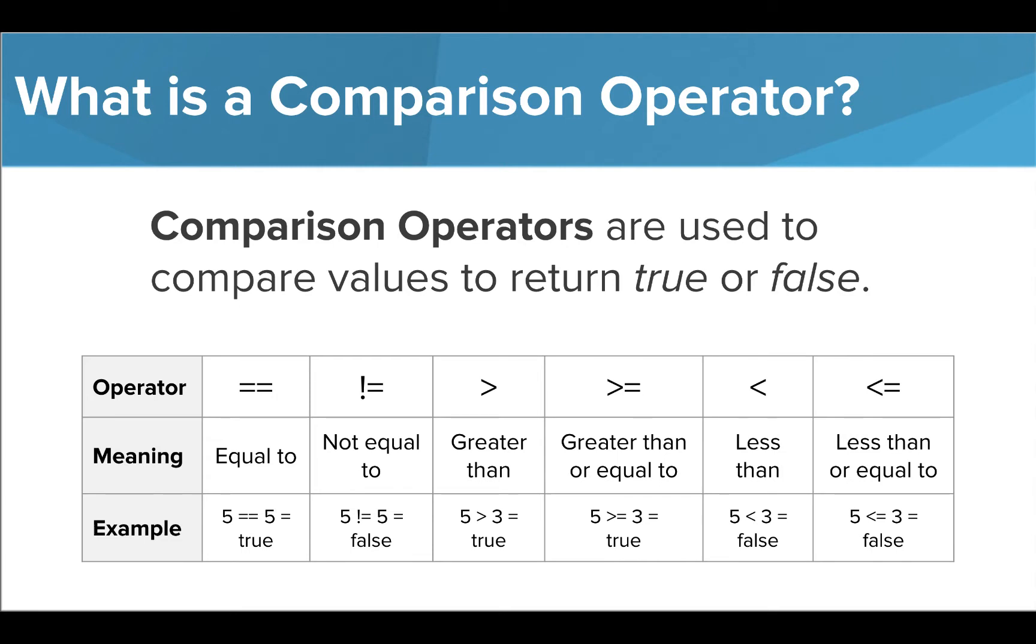Comparison operators are used to compare values and result in either true or false. These should all be pretty familiar to you as well, though you should note that to compare two values, we use two equal signs. If you try to compare values and use a single equal sign, the program will throw an error or you will introduce a bug into your program. So pay careful attention to this.